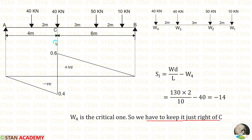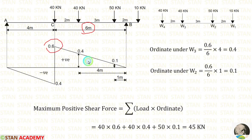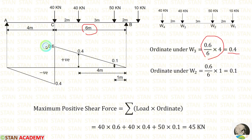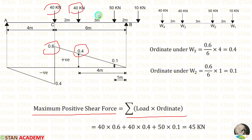We must keep W4 just to the right of C, because on the right of C only we have the ordinate for the positive shear force. I have kept W4 just to right of C. Now let us calculate the ordinates. For 6 meter it is 0.6, but for 4 meter I get 0.4, and for 1 meter I get 0.1. The formula for maximum positive shear force is the summation of load into ordinate: 40 into 0.6 plus 40 into 0.4 plus 50 into 0.1, giving us 45 kN.